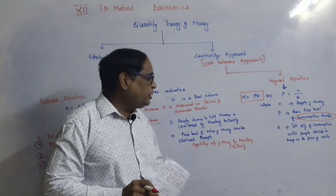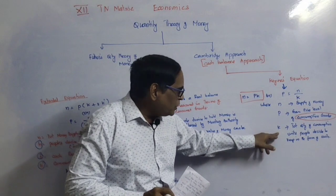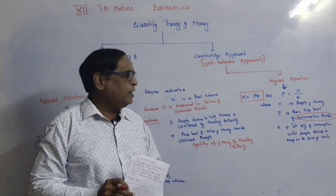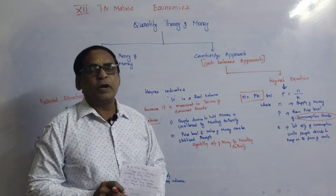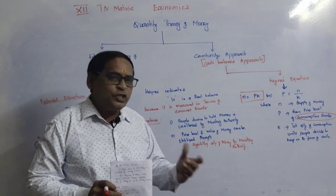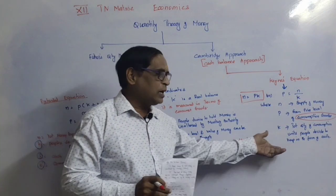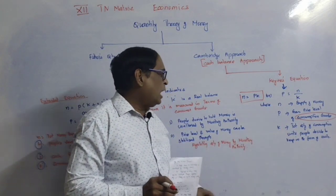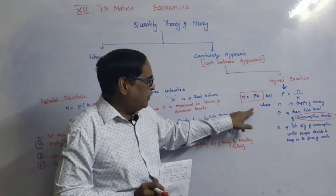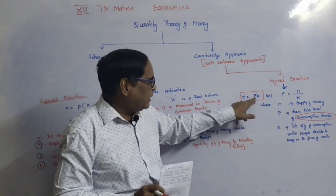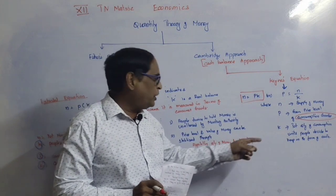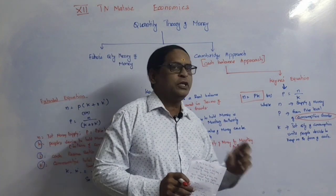According to Keynes, the quantity of consumption units people decide to keep in the form of cash is K. The general price level multiplied by the total quantity of consumption units gives N equal to PK.